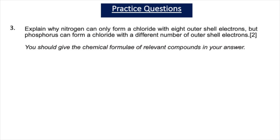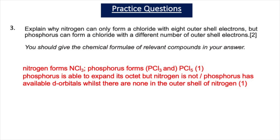Question three: explain why nitrogen can only form a chloride with 8 outer shell electrons, but phosphorus can form a chloride with a different number of outer shell electrons. This is a two-mark question; you should give the chemical formulae of relevant compounds in your answer. For one mark: nitrogen forms NCl3 and phosphorus forms PCl3 and PCl5. For the second mark: phosphorus is able to expand its octet but nitrogen is not, because phosphorus has available d-orbitals whilst there are none in the outer shell of nitrogen.